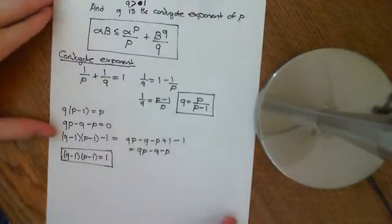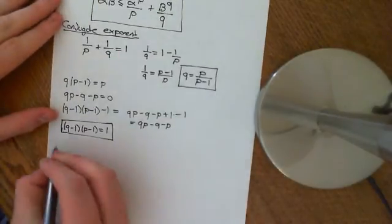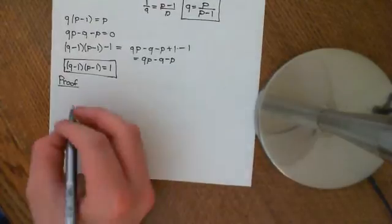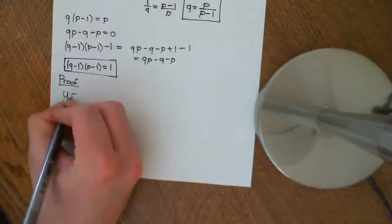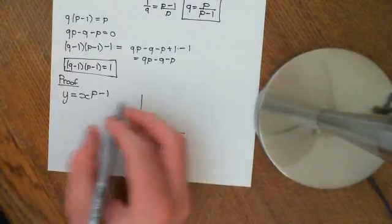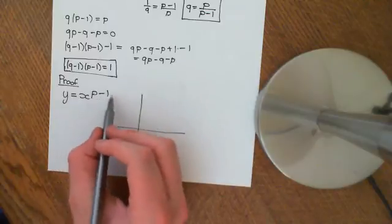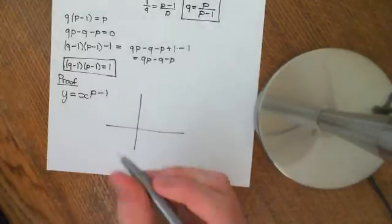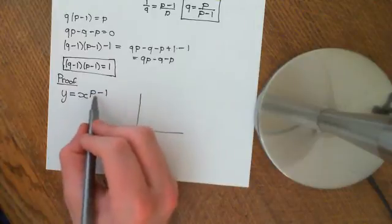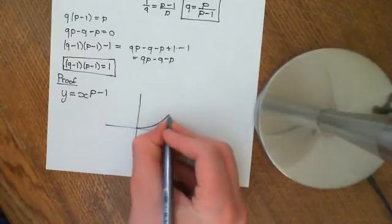Now that we know the full statement of Young's inequality and what conjugate exponents mean, we can start the proof. The approach is to look at a special function: y equals x to the power of p minus 1. Since p is greater than 1, the exponent p minus 1 is a positive real number. We restrict to x in (0, infinity), so the graph looks something like x squared as a canonical example.